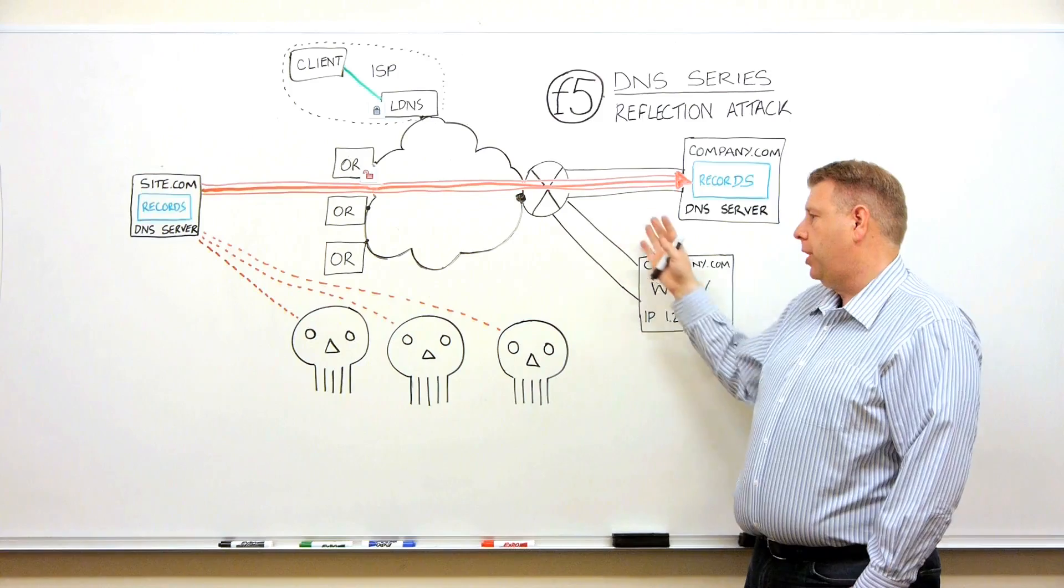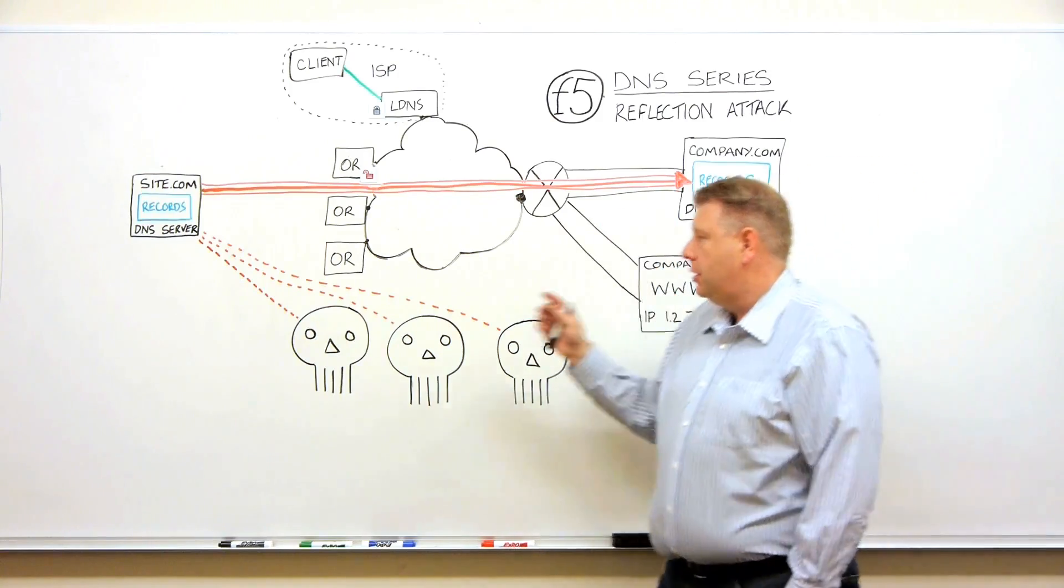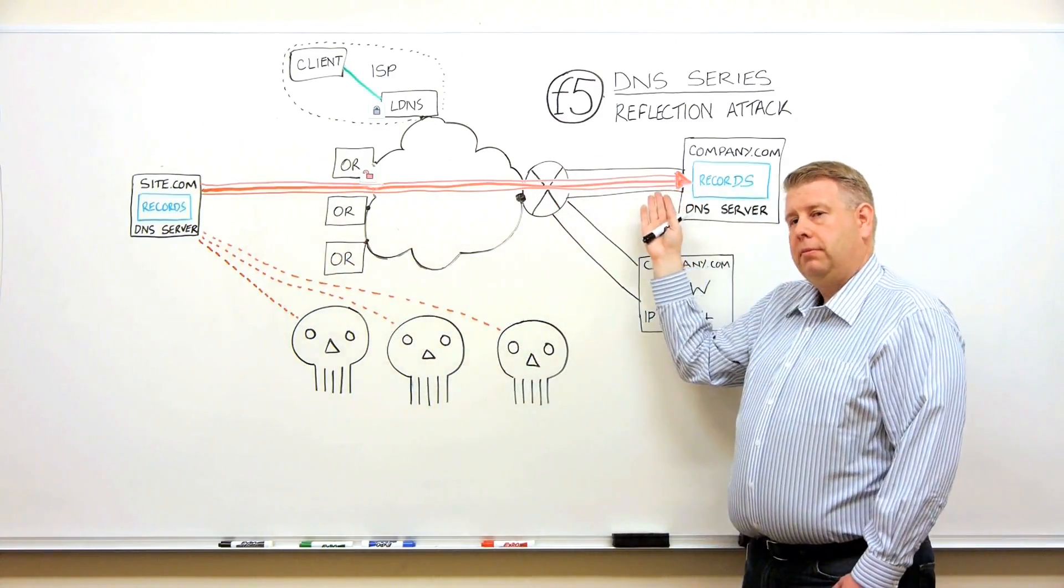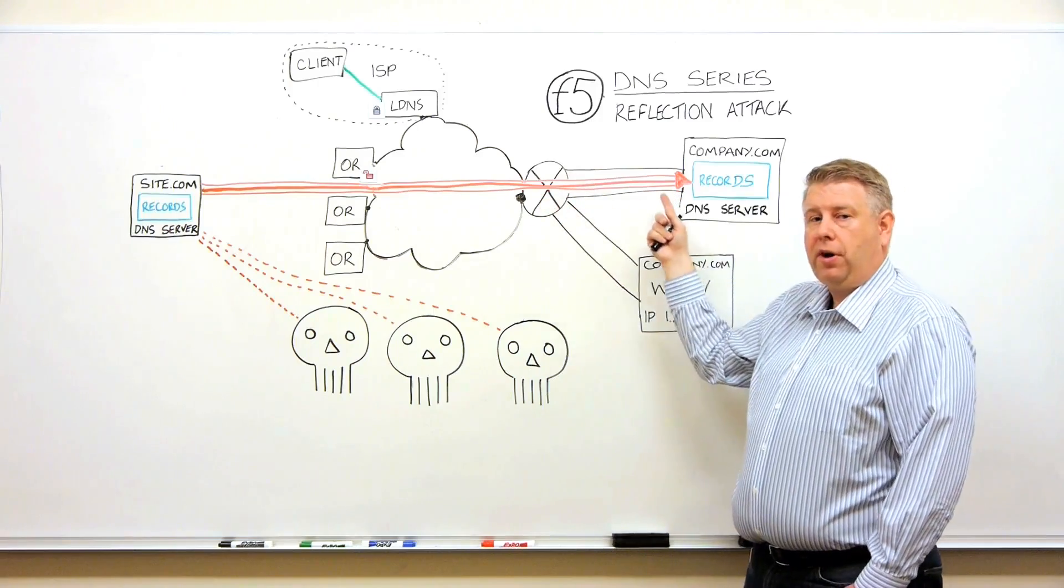The other part of a reflection attack, which is part of amplification, is to fill up this pipe with all of these responses. So that internet link is now full of all these responses.